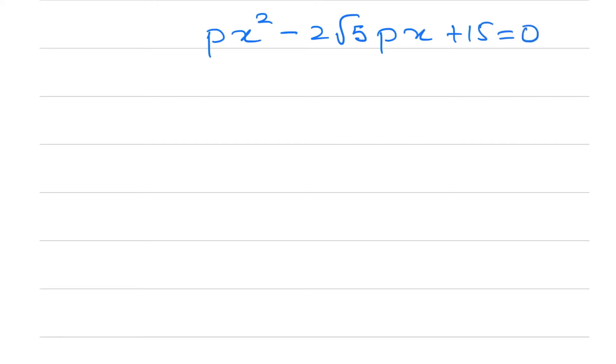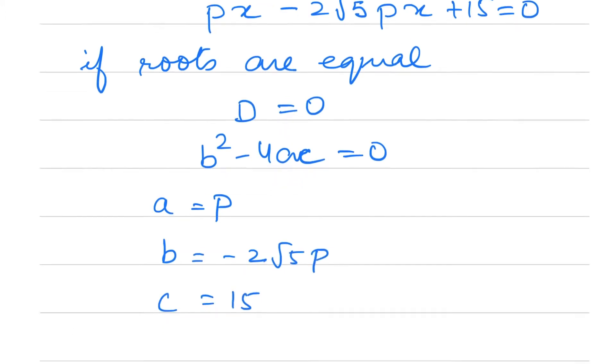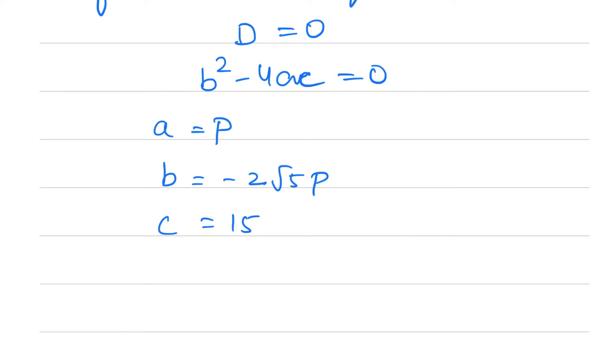We need to find the value of p when the equation has equal roots. If roots are equal, we can say that discriminant is equal to 0, or b² - 4ac = 0. Here a is p, b is -2√5p, and c is 15. Let's substitute the values in b² - 4ac.